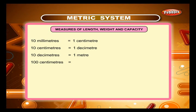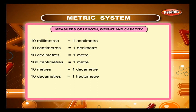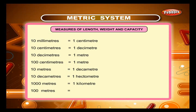100 cm is equal to 1 m; 10 m is equal to 1 decametre; 10 dm is equal to 1 hectometre; 1000 m is equal to 1 km; 100 m is equal to 1 hectometre.